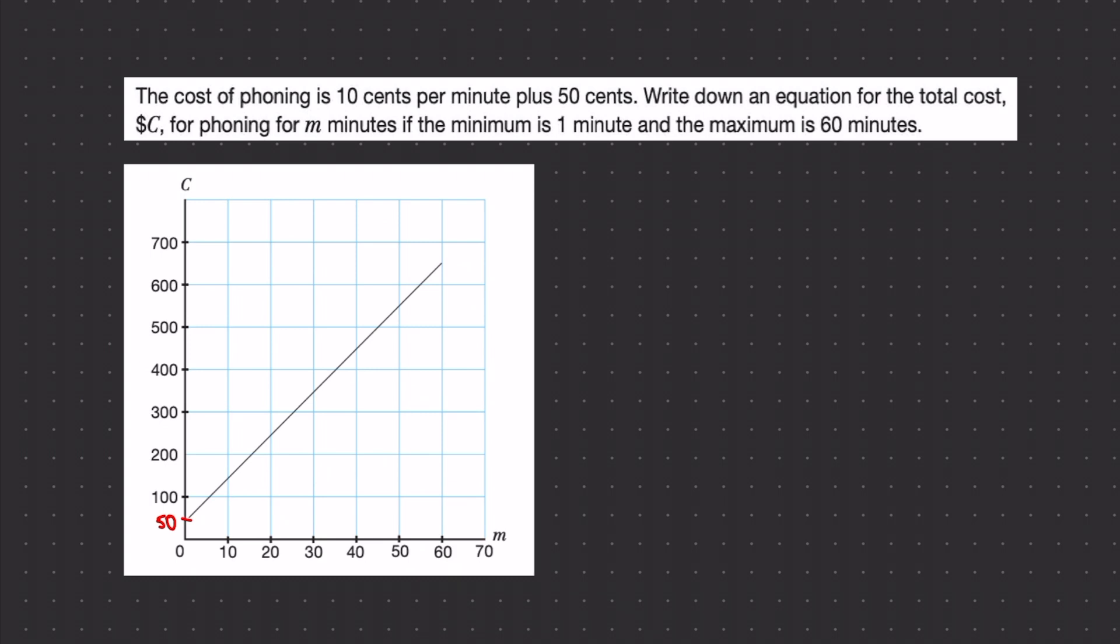And then 10 cents per minute - that means for every minute I go across on the x-axis I'm going up by 10 cents because cents has been plotted on the y-axis and minutes has been plotted on the x-axis. So that means that my gradient m is going to be in this case 10. So c is on my y-axis, m is on my x-axis, 10 is my gradient and I know that my plus c is 50. Therefore I've done the first part of the question - I've written down an equation for the total cost.